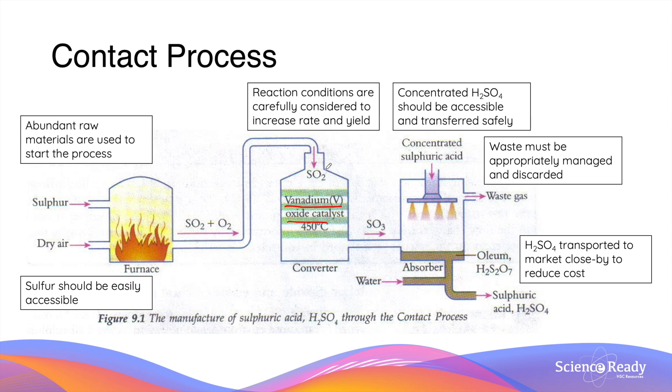We will talk more about this particular step in the very next slide. The sulfur trioxide that is produced from the converter is then pumped into a third chamber, whereby it reacts with an existing amount of sulfuric acid. And in this step, we are producing a chemical called oleum, H2S2O7.